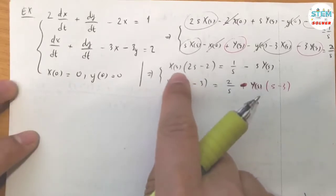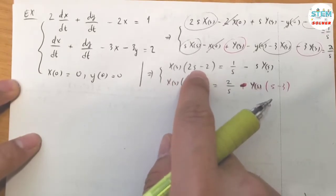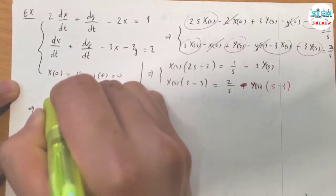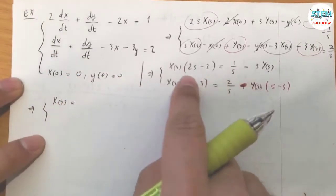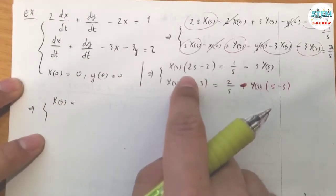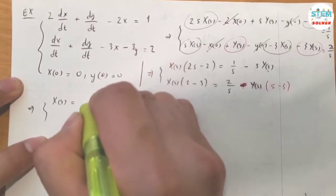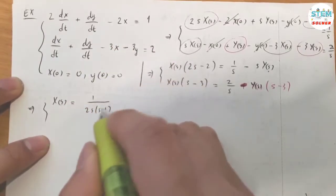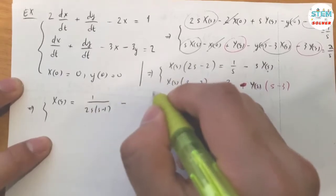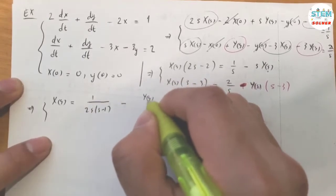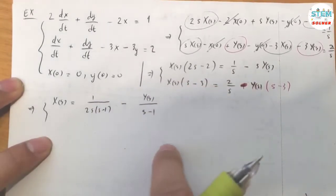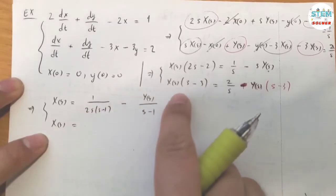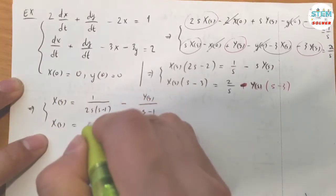Now divide both sides by (S minus 1) for the first equation, also factoring out the two. For the second equation, divide both sides by (S minus 3). This isolates X(S) in both equations.